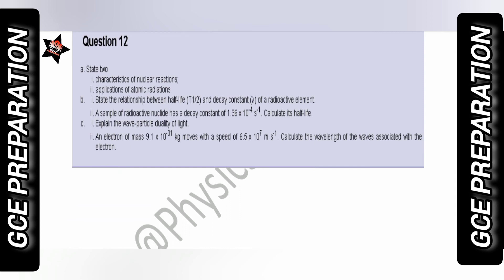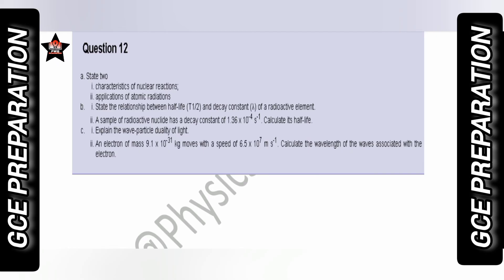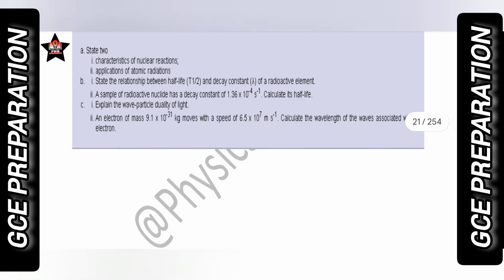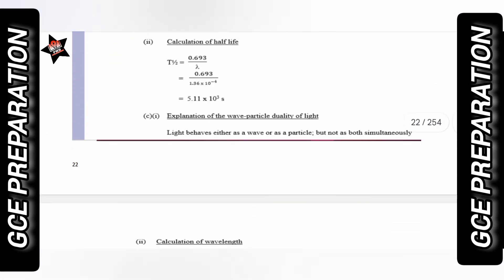Question number twelve is under quanta and atomic theory. The questions that form question twelve include: radioactivity, nuclear reaction, energy quantization, photoelectric effect, binding energy, semiconductors, and wave-particle paradox. You don't know which one the examiners will choose and bring up for you, so prepare yourself across all these areas and you stand a chance of getting your A.